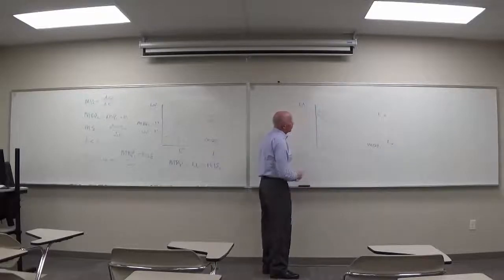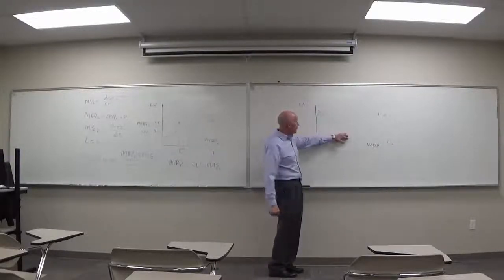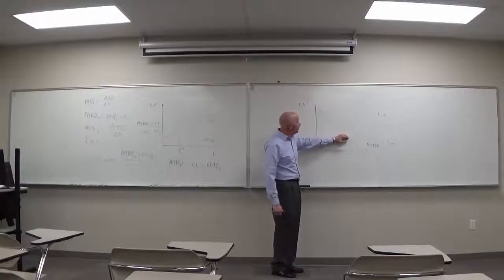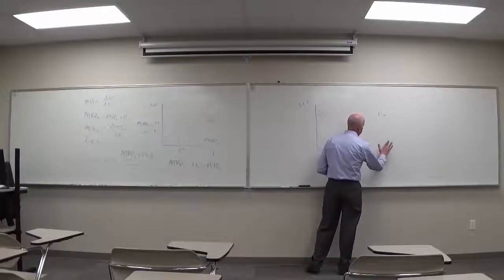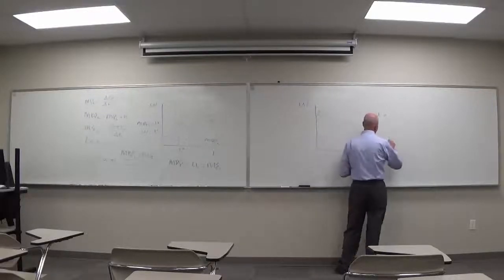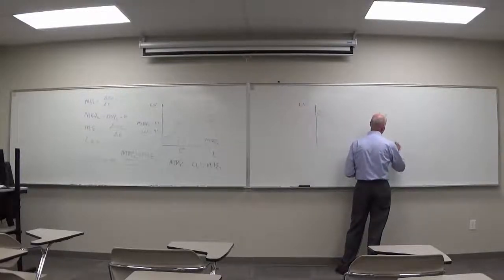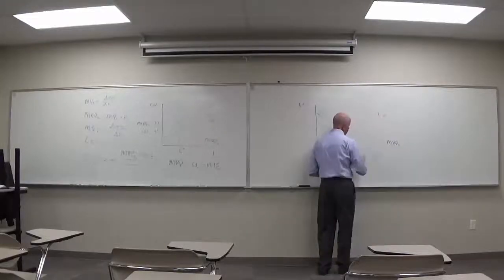Our model is going to look something like this, where we have an upward sloping labor supply curve, a downward sloping marginal revenue product of labor curve, separated from labor demand. And I actually wrote that backwards, I apologize. Marginal revenue product of labor is out to the right of labor demand in a non-competitive market.